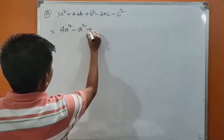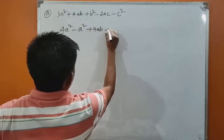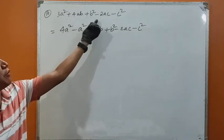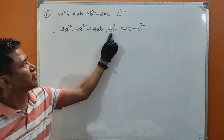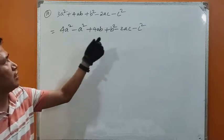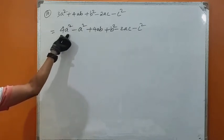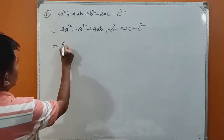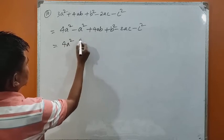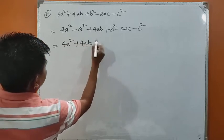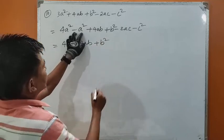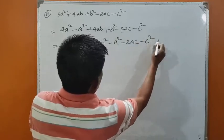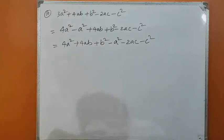Now I will copy the rest as it is: plus 4ab plus b square minus b square minus 2ac minus 2ac minus a square. So instead of 3a square, I wrote 4a square minus a square. Now let me rearrange these numbers: 4a square, plus 4ab, plus b square — and then minus a square minus 2ac minus c square. I am just changing the places; the value remains unchanged.